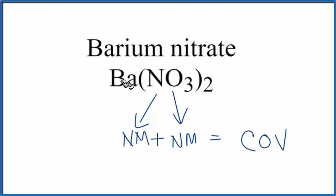But overall, the barium, the metal, and the nonmetals, that means that this entire thing is an ionic compound. So we have our ionic bond between the barium and the nitrates, but the nitrates, the oxygens and the nitrogens, those are covalently bonded.